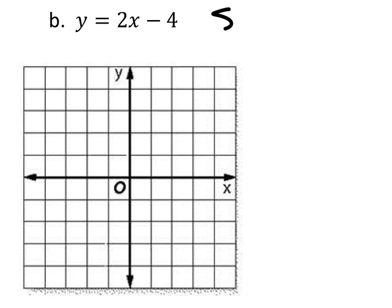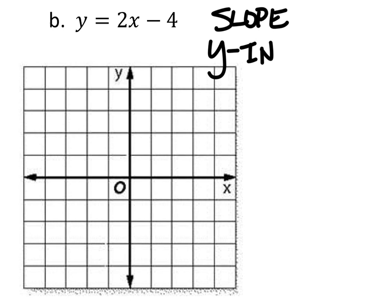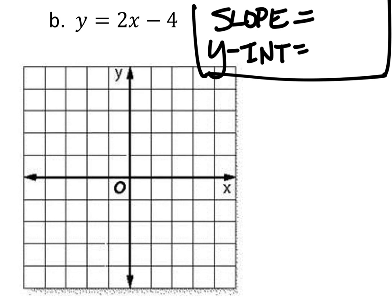Alright, so in this problem it also wants us to find the sloppage again, and also the y-intercept, which I'm just going to put my answers right here so that they can be easily found. Once again, this equation is in the form y equals mx plus b.